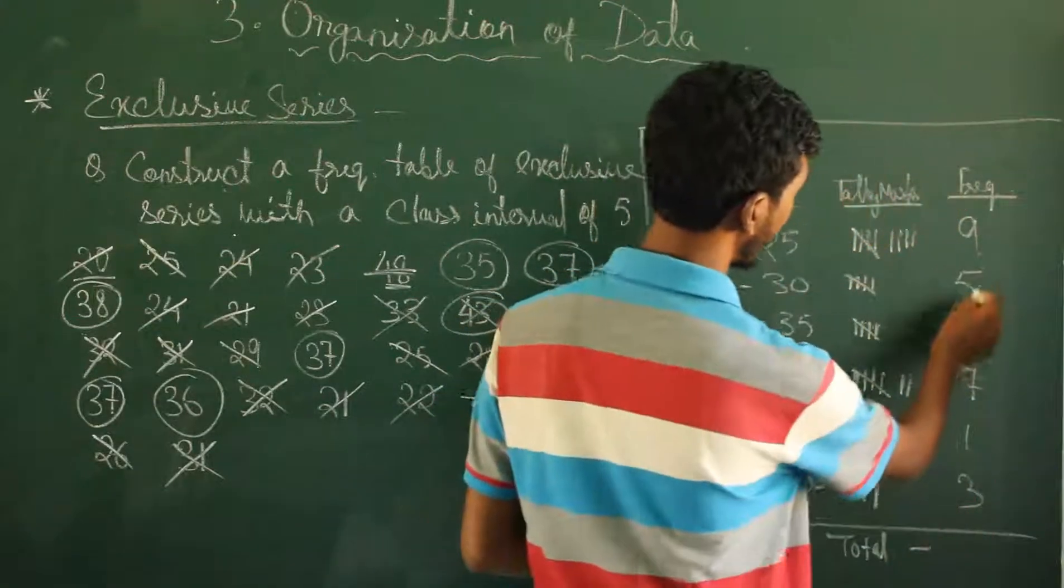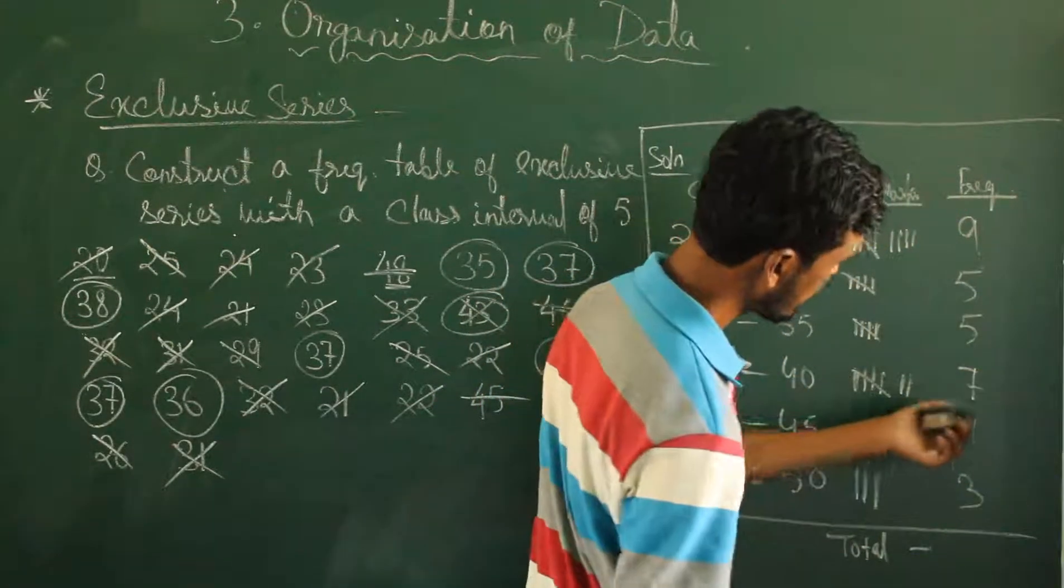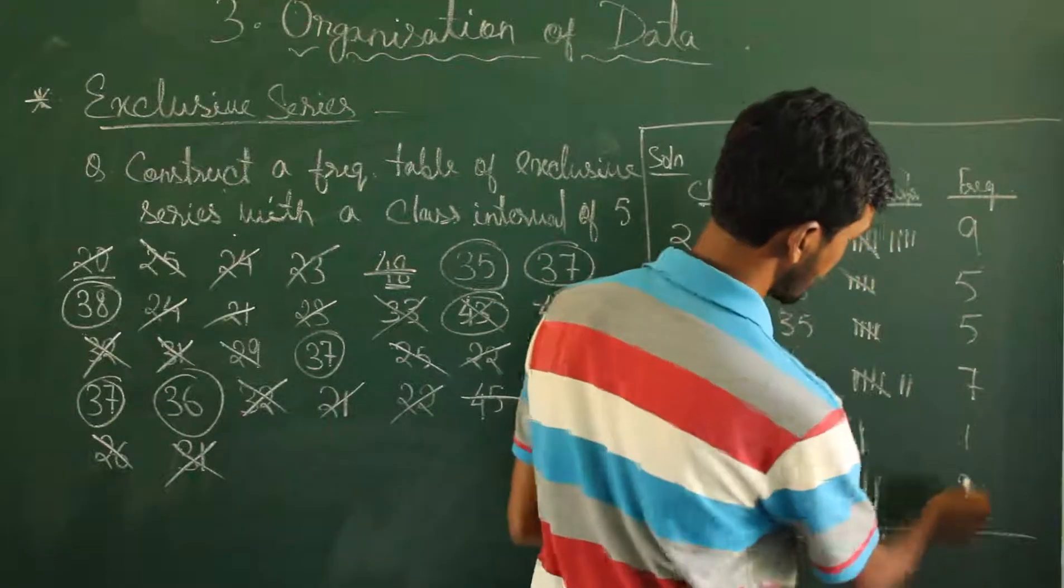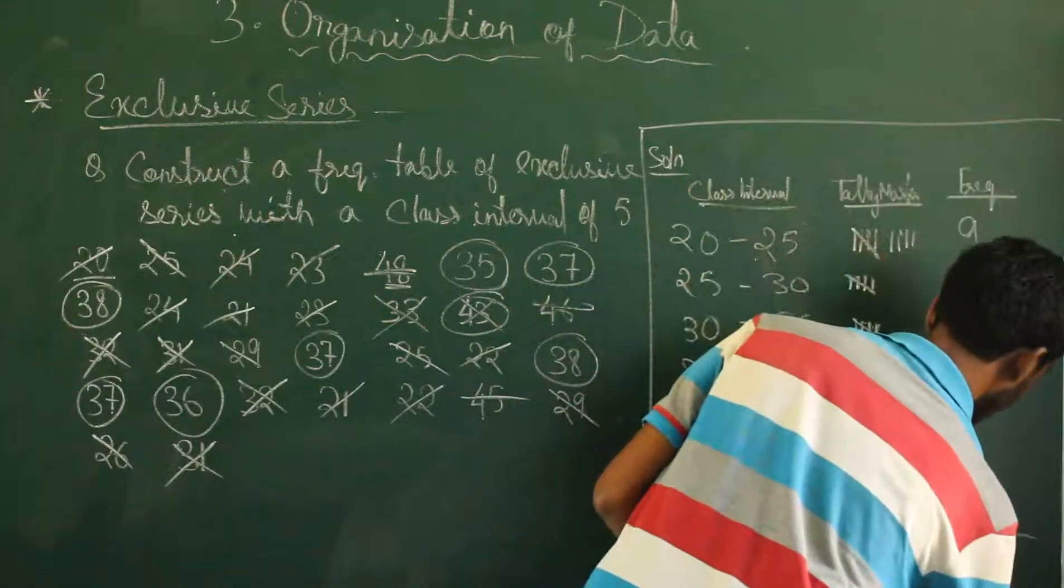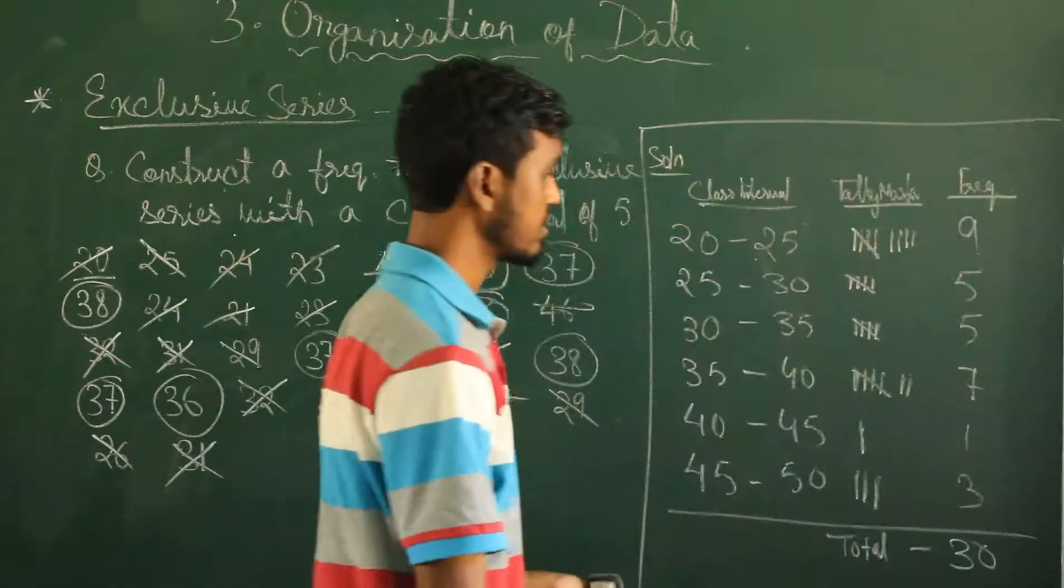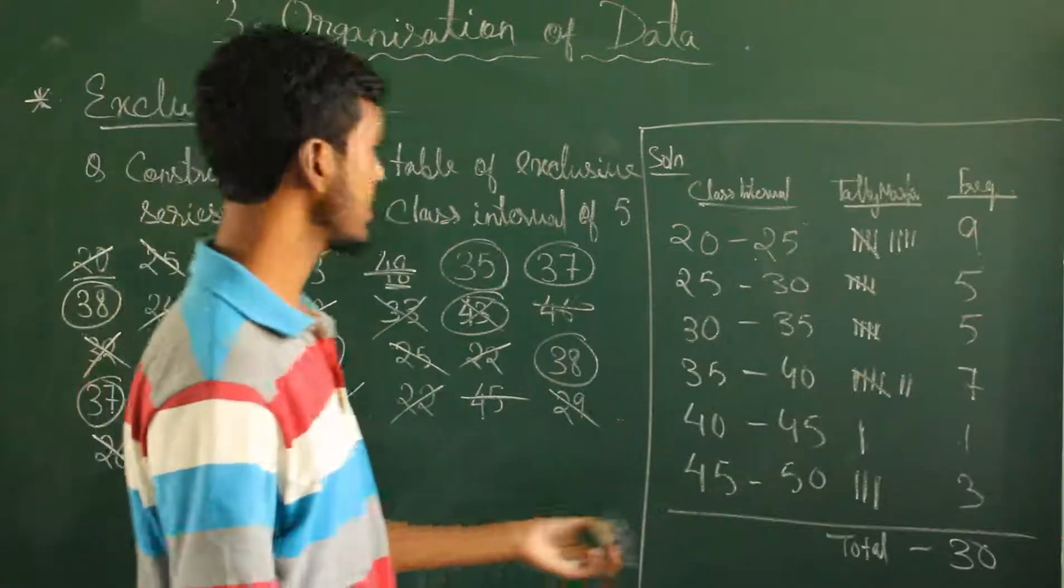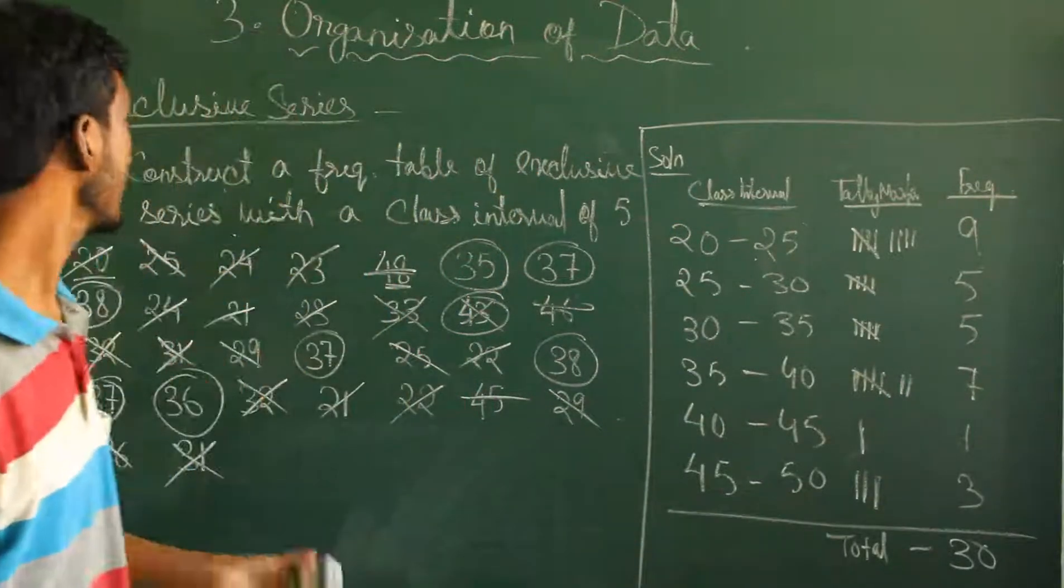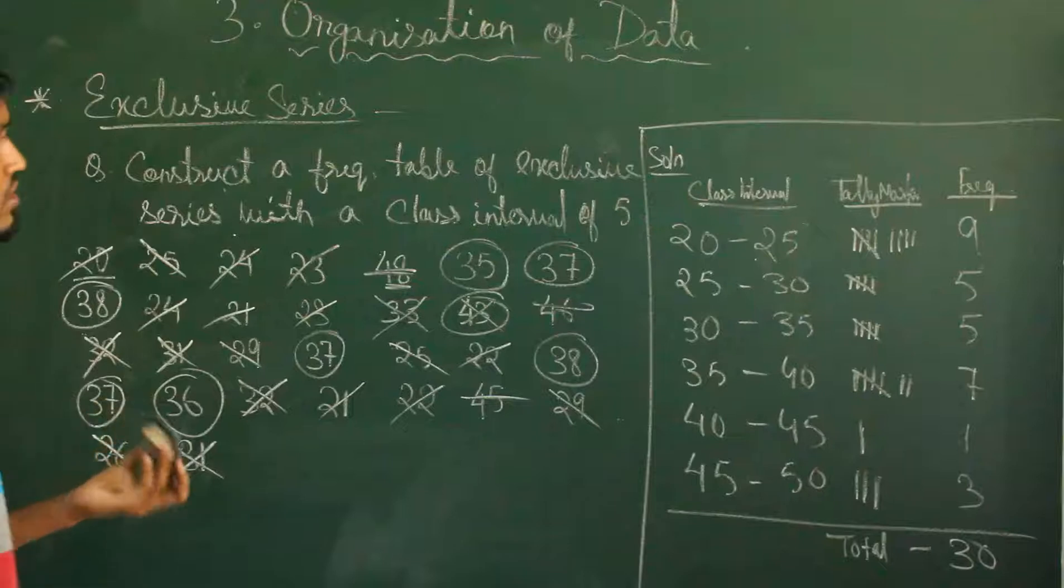9, 5 is 15, 15 plus 7 is 22, 26, 27, 33. So the total frequency and the total number of students is 33. So this is the exclusive series.